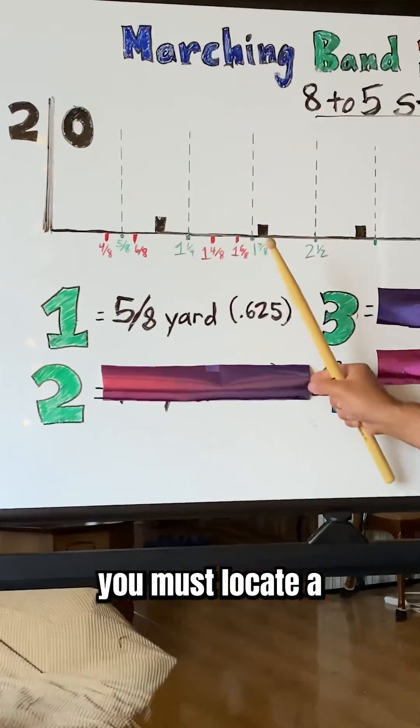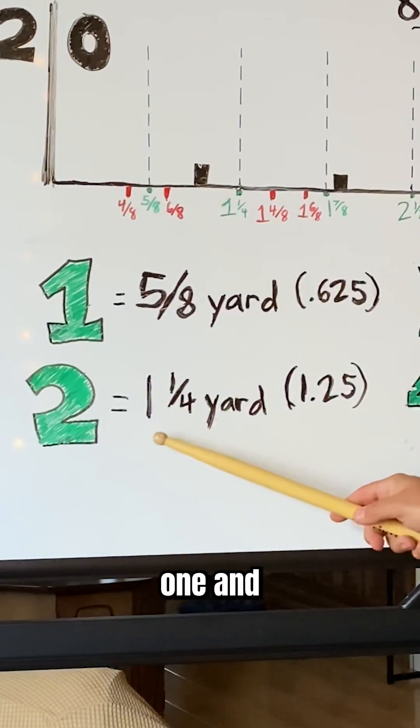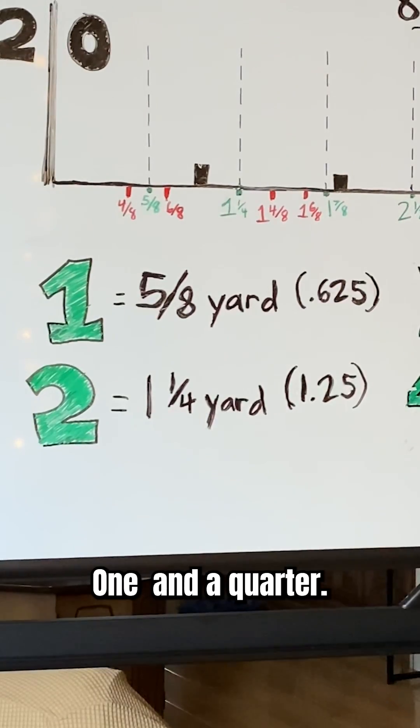Next up, to find 2, you must locate 1 and 1/4 yards, or 1.25, one and a quarter.